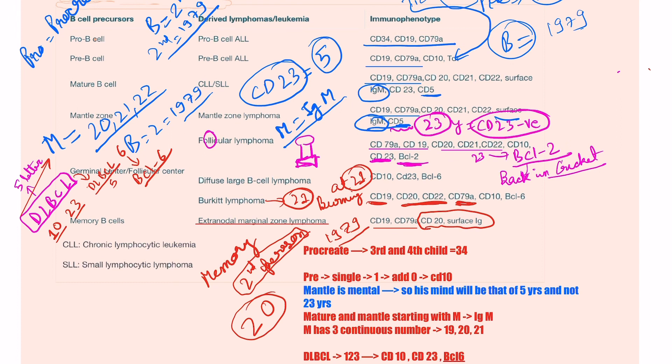So here was an effort for remembering the B cell precursor and the phenotype. One addition that we can do for remembering the mantle zone lymphoma is that mantle is mental. When someone is mental, then his mind is of like a five-year boy and not that of a 23-year person. So mantle zone lymphoma have CD23 negative.